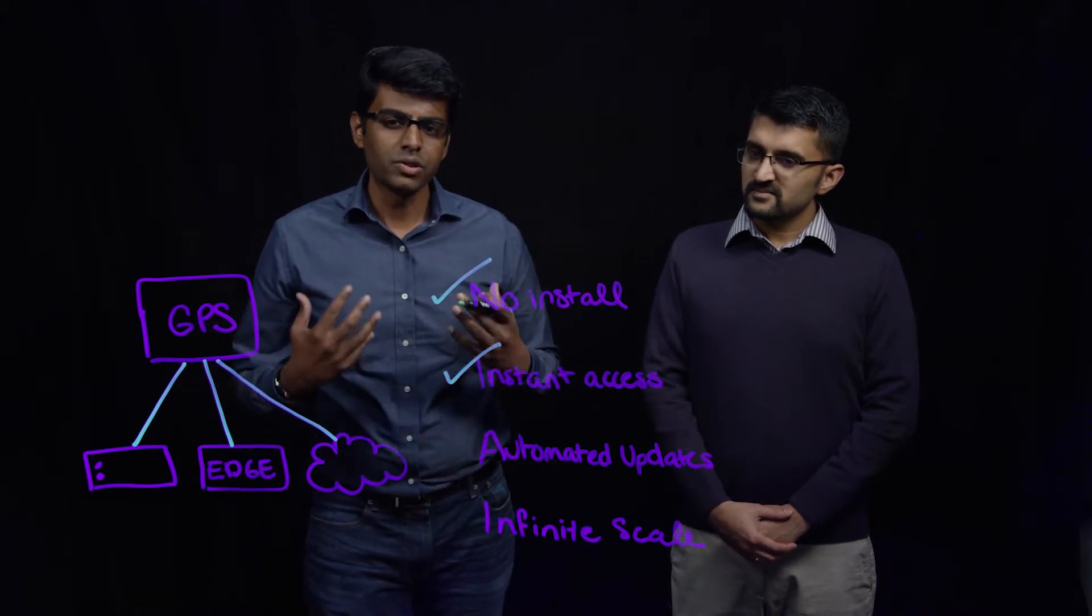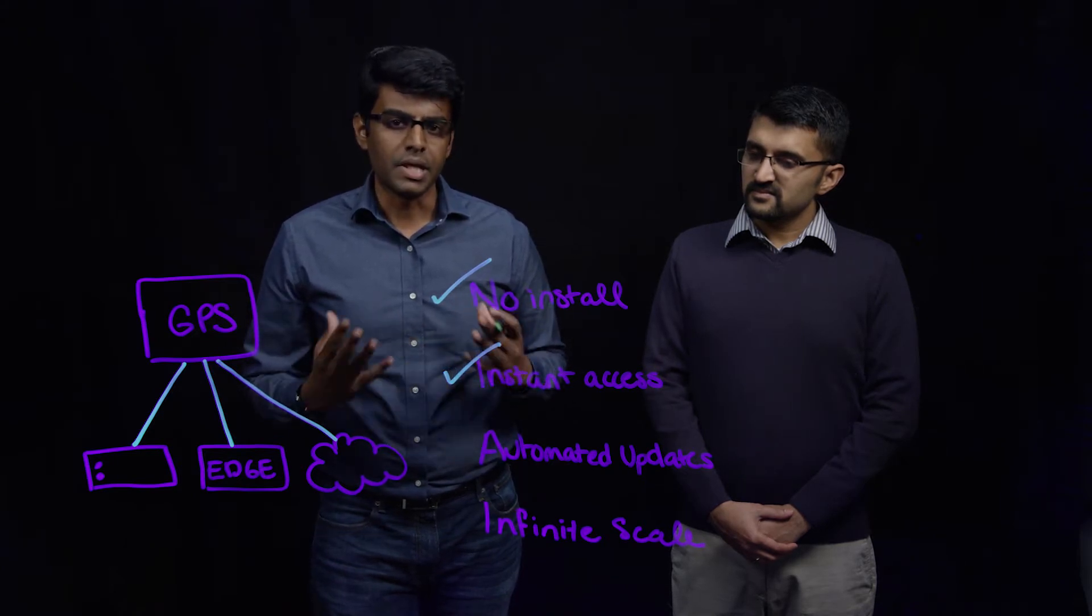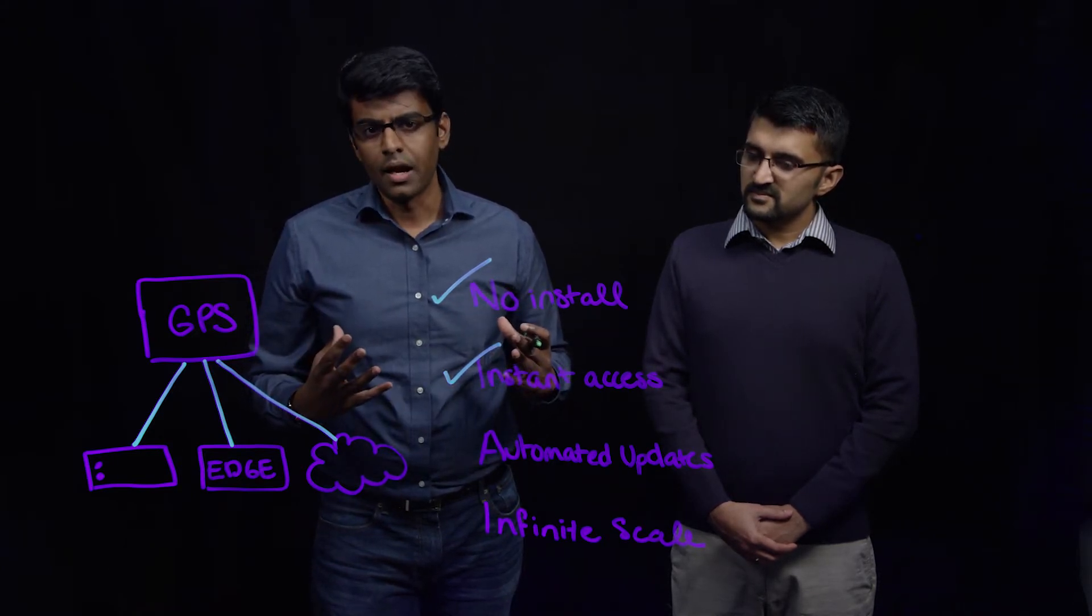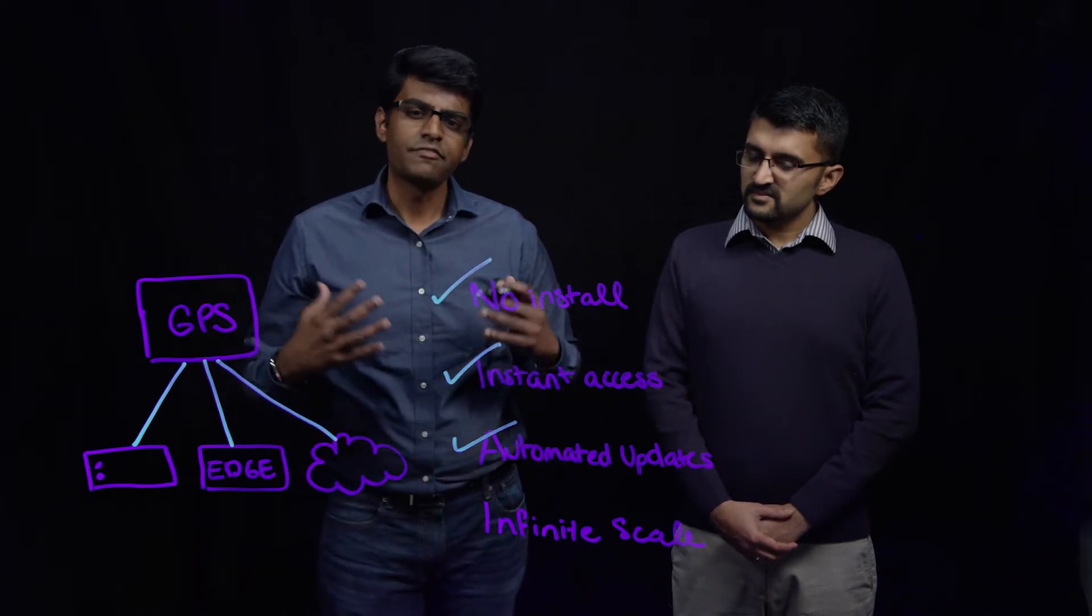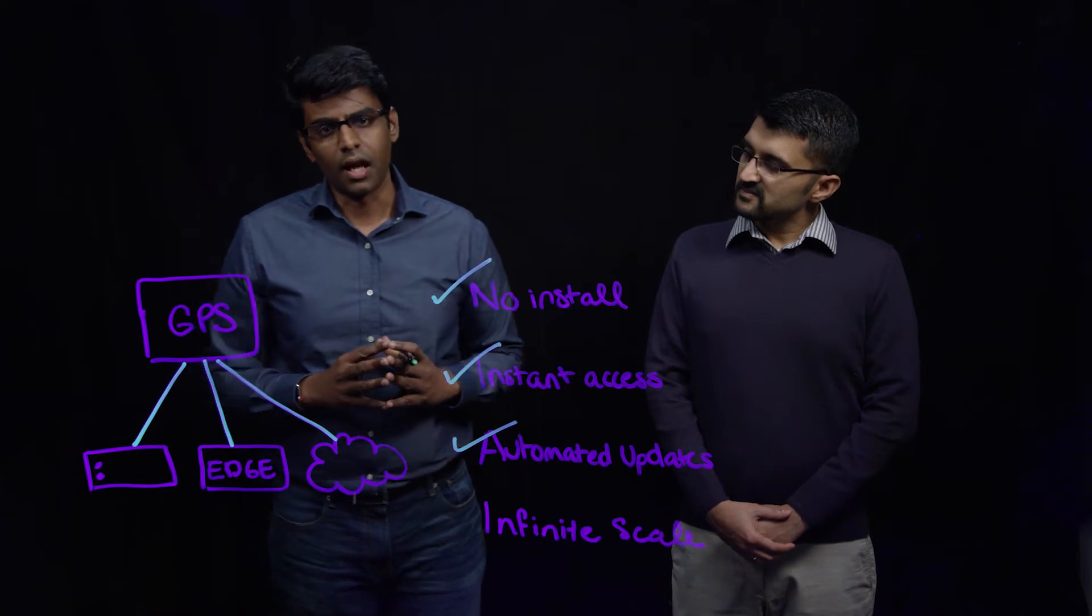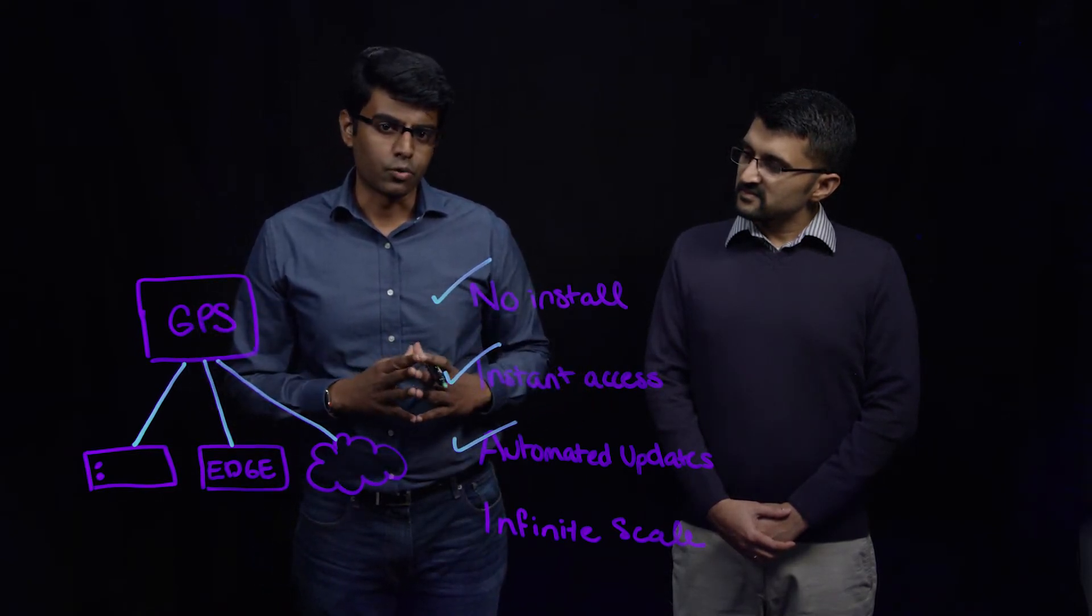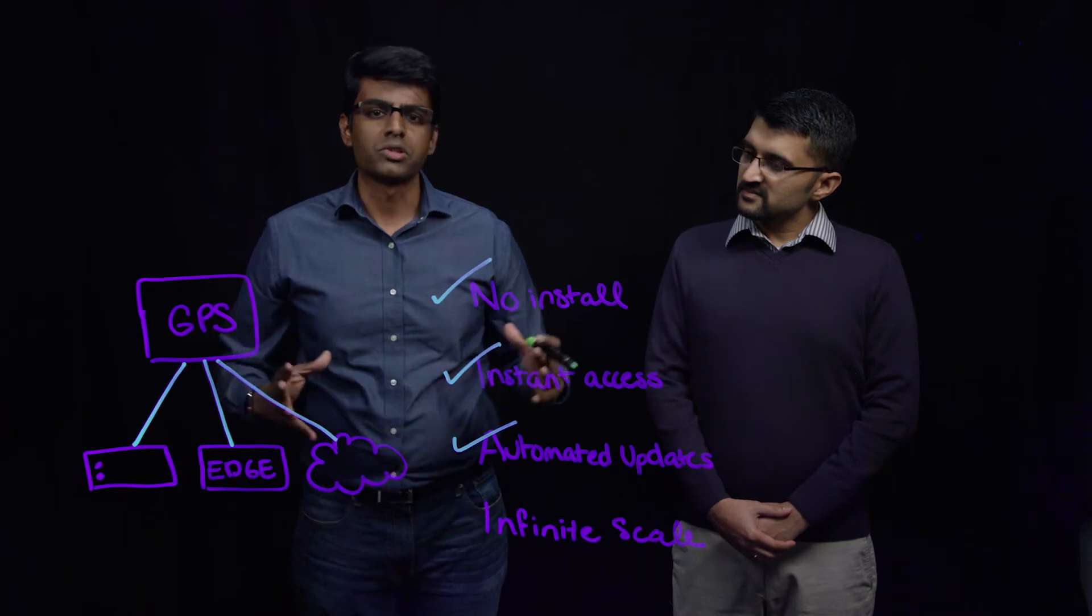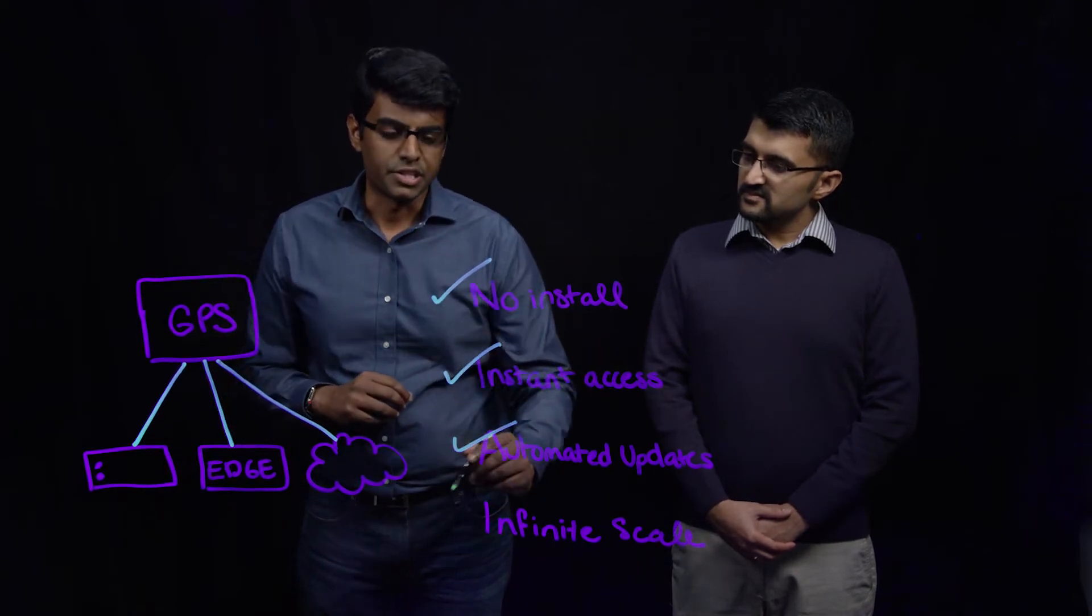Third, it allows our customers to get features and new updates immediately without having to be waiting for software upgrades or expecting a downtime. And finally, Polaris GPS allows our customers to scale their environment, especially the Rubrik deployment environment, almost infinitely and be able to manage all of them from Polaris GPS centrally.